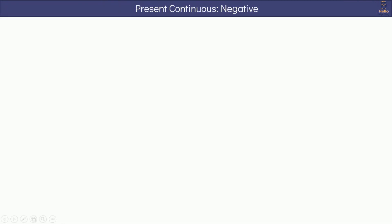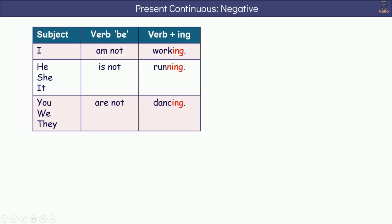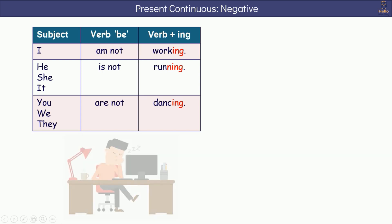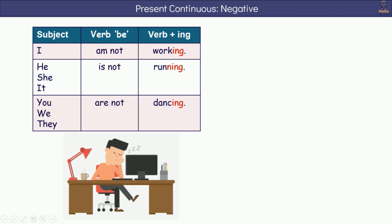Next, let's learn how to form negative sentences. We begin with subject, followed by verb be and verb with -ing. For example: I am not working. He, she, it is not running. You, we, they are not dancing.